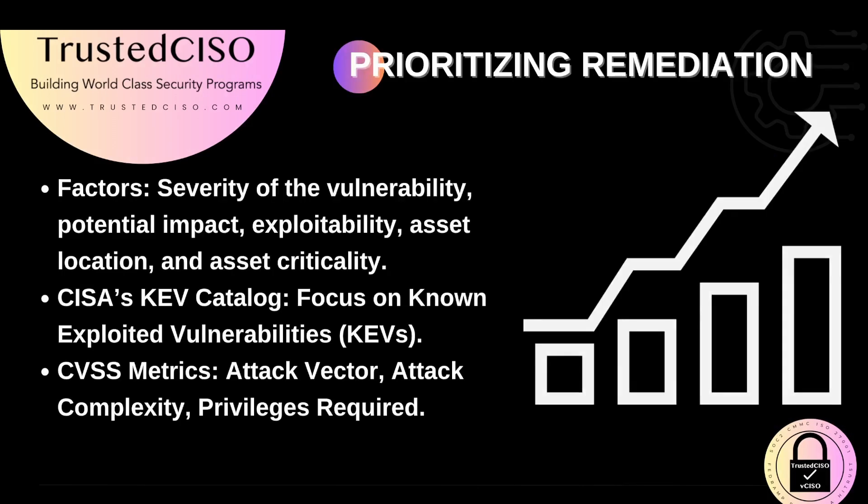Vulnerability prioritization is the only way to properly deal with the enormous number of vulnerabilities published on a daily basis. Not all vulnerabilities pose the same level of risk, so prioritizing remediation efforts is crucial. Factors to consider include the severity of the vulnerability, its potential impact, exploitability, and the criticality of the affected asset. Using CVSS metrics and focusing on known exploited vulnerabilities via CISA's KEV catalog can help in effectively prioritizing remediation efforts.